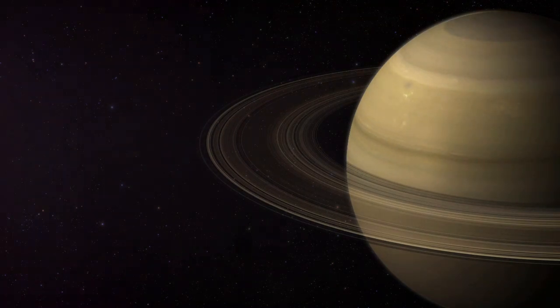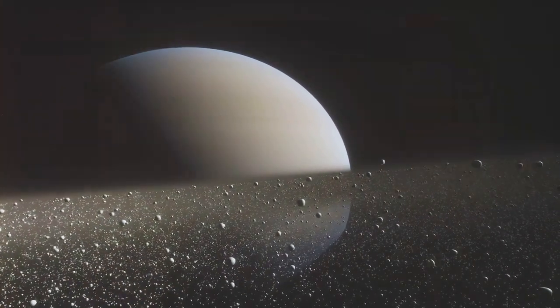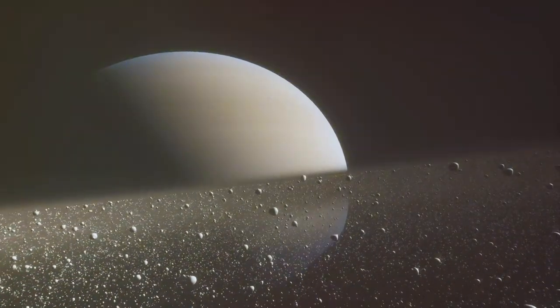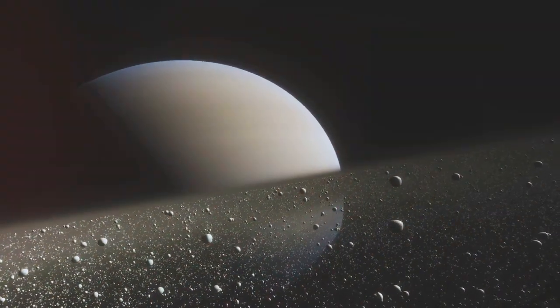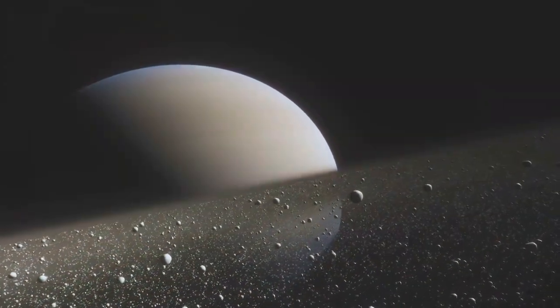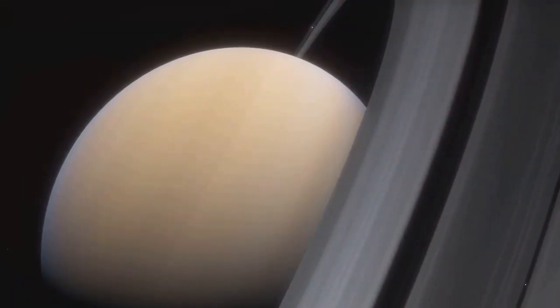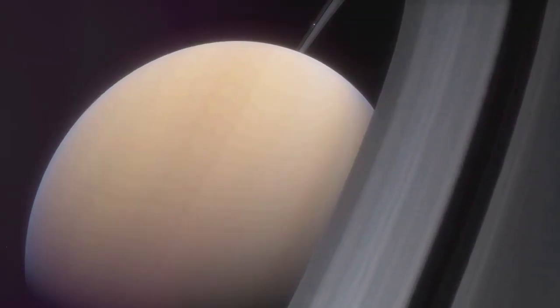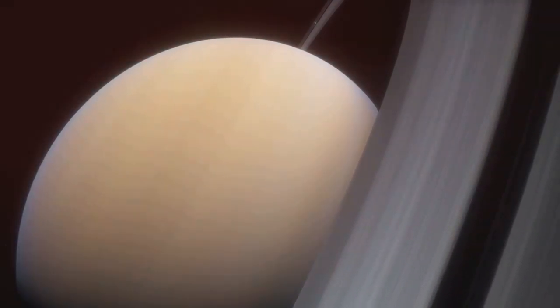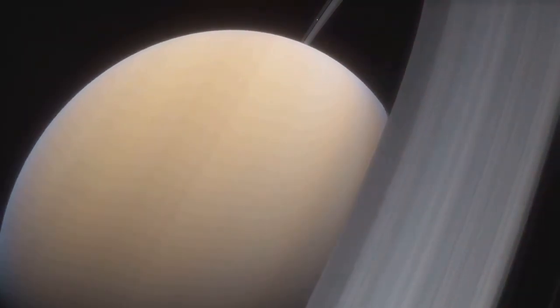First stop, the gas giant Saturn, renowned for its majestic and extensive ring system. Comprised of countless ice particles, Saturn's rings span up to 280,000 kilometers, but are surprisingly thin, measuring just about 10 meters in thickness. They're classified into several divisions, from the densest A and B rings to the fainter C ring. It is the gravitational pull of Saturn's moons that gives these rings their intricate structure.